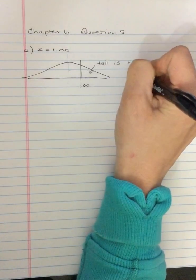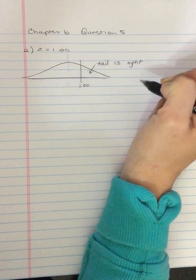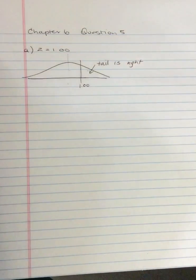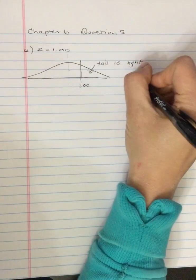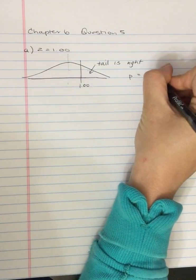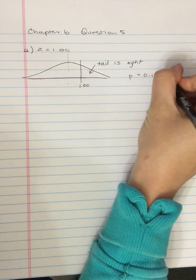The tail is on the right side, the right-hand side. And then, if I go to the unit normal table and I look up 1.00 in column A, and I look across to column C for the proportion in the tail, that proportion is 0.1587.